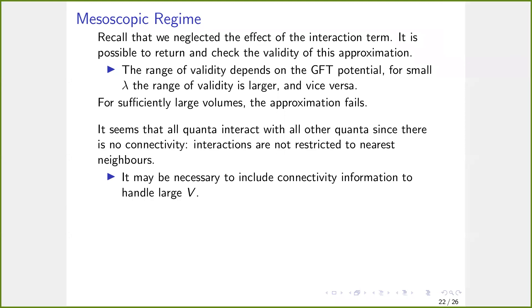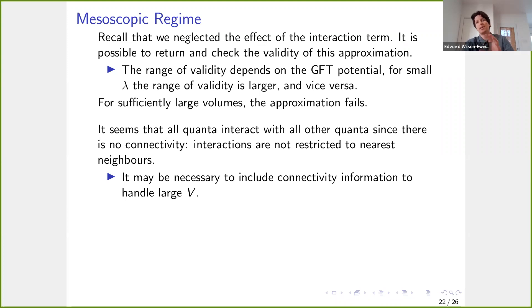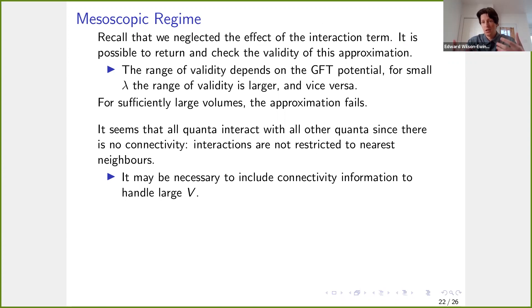Question: How much do these results depend on the choice of vertex amplitude? Response: Changing the vertex amplitude is essentially just changing the potential entirely. The general statement will still be true, but the details of 'sufficiently large' will change. Typically, when the volumes are sufficiently small, this is a good approximation; when the volumes are sufficiently large, it's a poor approximation. What 'sufficiently small' and 'sufficiently large' mean will depend on the specific interaction you choose.